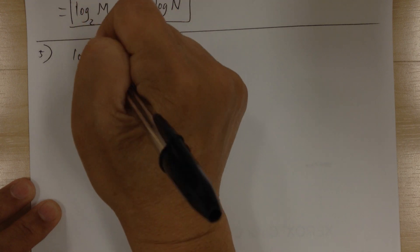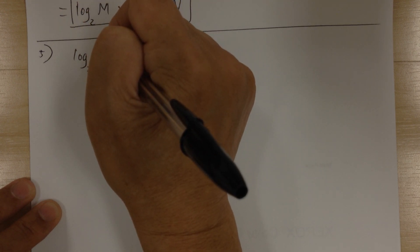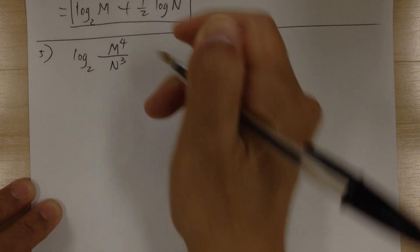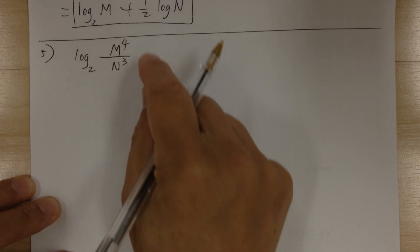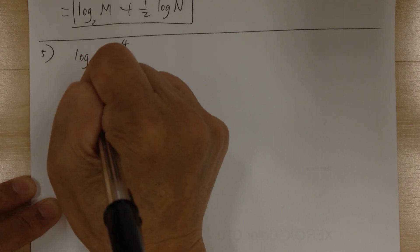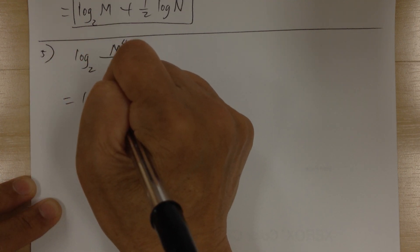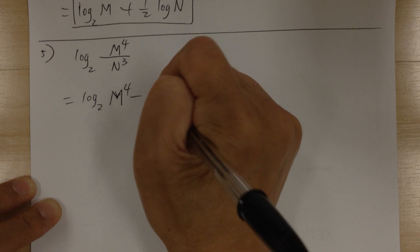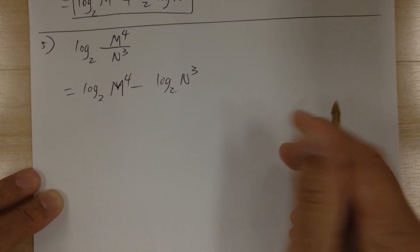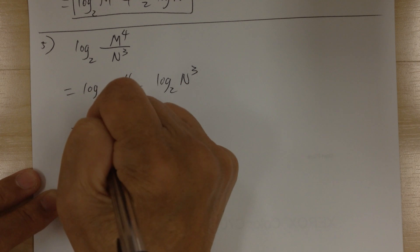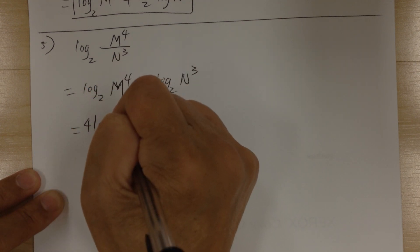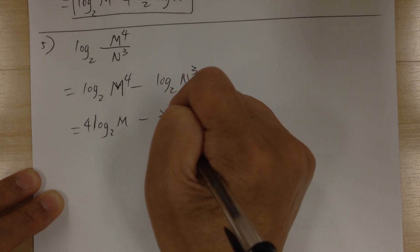Log base 2 of m to the 4 over n to the 3. You can first separate the 2, but because it's a division, it will become subtraction. Then apply the third log: the 4 comes to the front, and the 3 comes to the front.